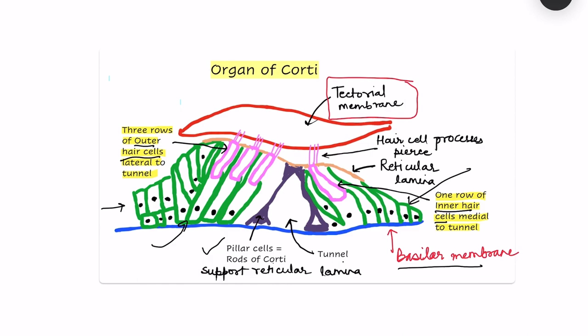The supporting cells include Deiters cells, Hansen cells, and three or four other types. The hair cells are protruding into the tectorial membrane. So the types of cells in the organ of Corti are: pillar cells, inner hair cells, outer hair cells, and supporting cells.